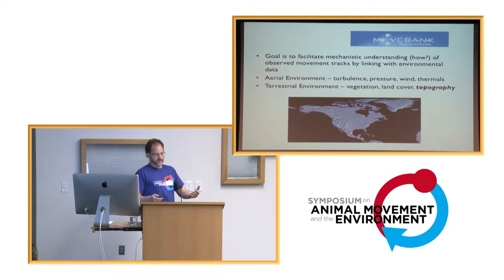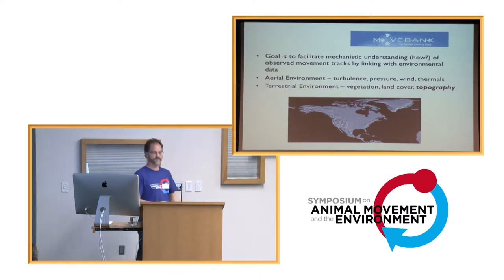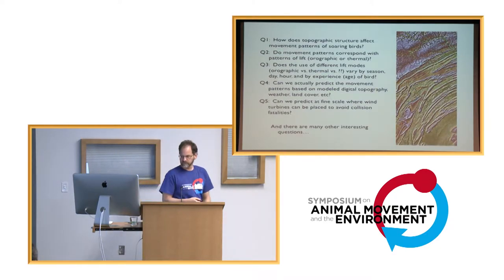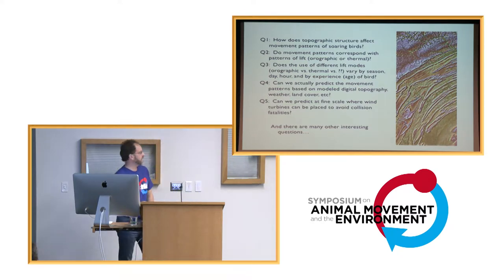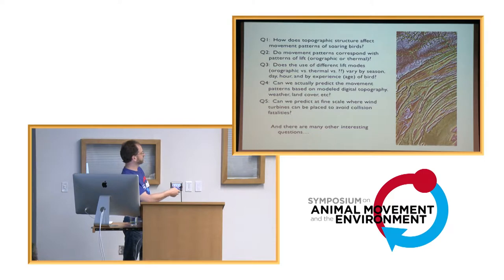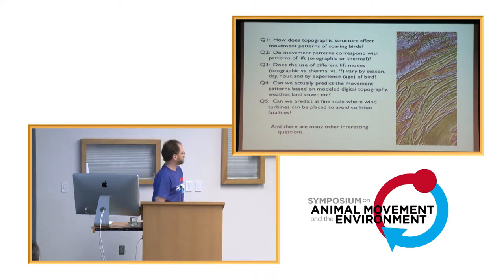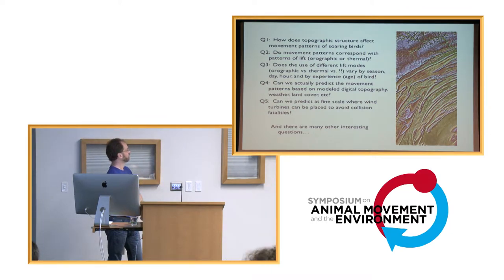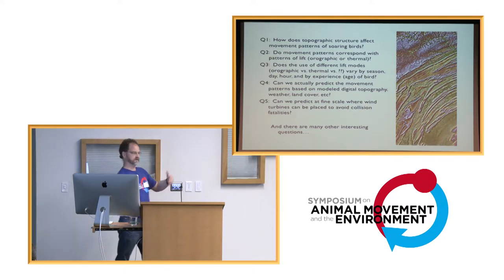I'm actually, by training, a hydrologist, so I've been looking at topography forever. When you look at a shaded relief map of Pennsylvania, you see unique features: linear ridge-and-valley features, a high plateau dissected by river valleys, and a wide valley at the bottom right. These structures will in some way affect movement of animals and birds.